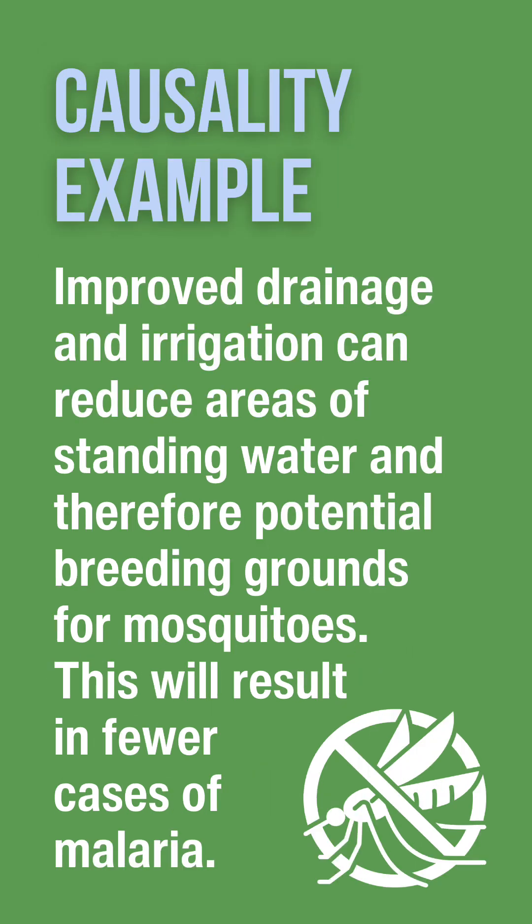An example of causality is how we can reduce the risk of malaria through improving drainage and irrigation, which will reduce the areas of standing water and therefore reduce breeding grounds for mosquitoes.